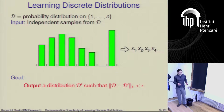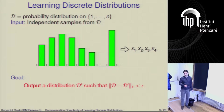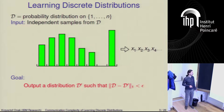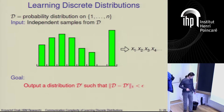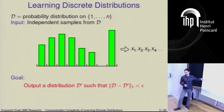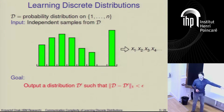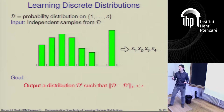In this talk I'm mostly going to focus on the most basic task, which is learning the distribution. In general, we're going to assume we have some underlying probability distribution and we'll be receiving independent samples from this distribution. The goal is to output a distribution which is a good approximation to this unknown distribution — to output a distribution D' such that the L1 distance between the two distributions is at most epsilon, where epsilon is some parameter we receive on input.